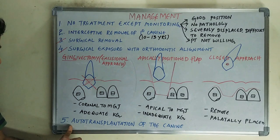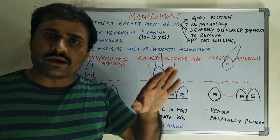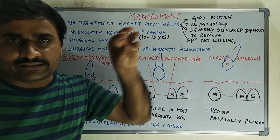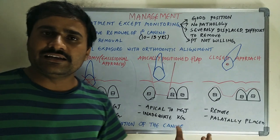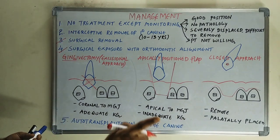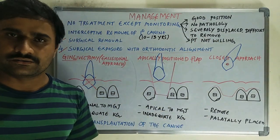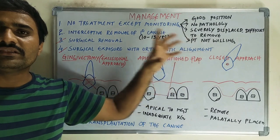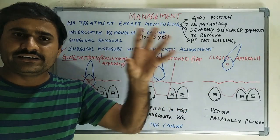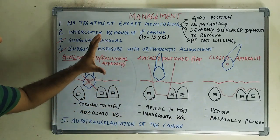The fifth management option is autotransplantation of the canine — surgically removing the impacted canine without damage, preparing a recipient socket, and transplanting the canine into that socket. This is not frequently done. The key options to focus on are surgical removal and surgical exposure with orthodontic alignment, the latter being indicated when the crown position and inclination of the impacted canine are favorable for guided eruption into the desired position.